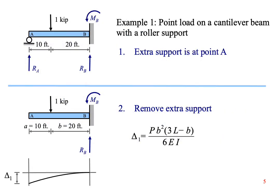Let's solve a problem with numbers. The extra support is at point A. If we remove the extra support, the beam will sag due to a point load that is not located at the free end of the beam. Appendix F gives us a formula for finding deflection at the end of the beam due to a point load that is not at the end of the beam.